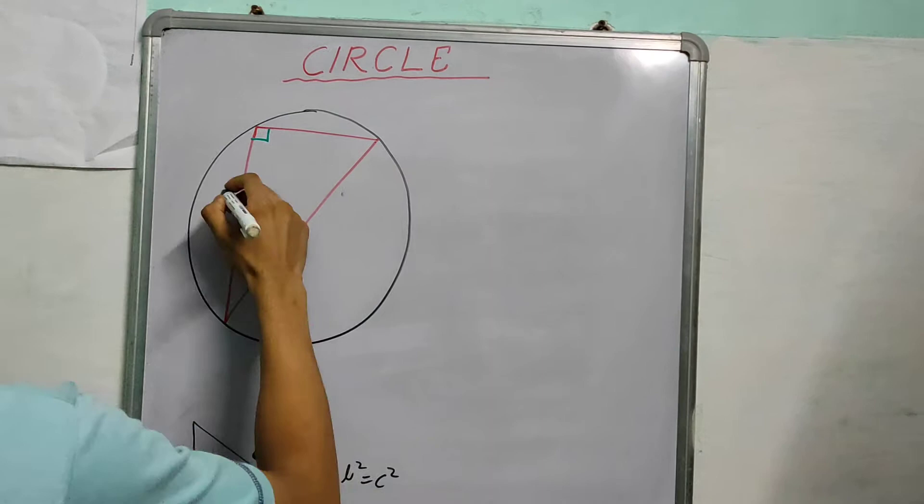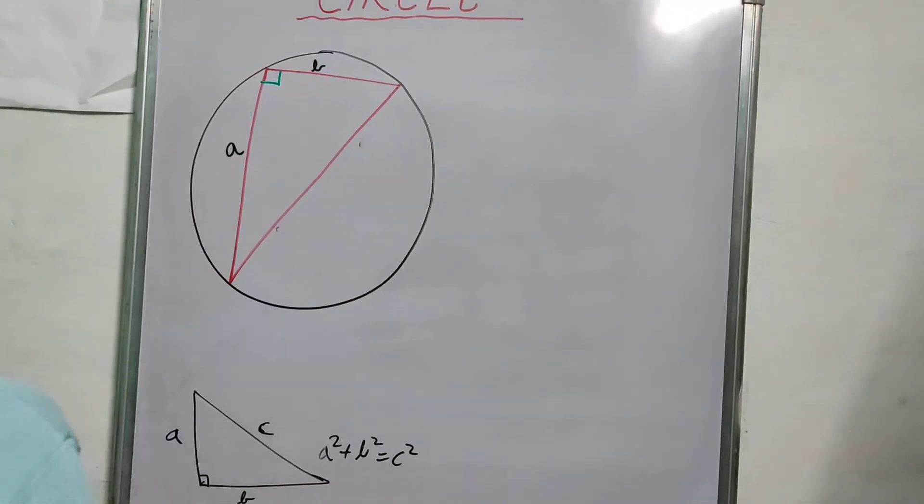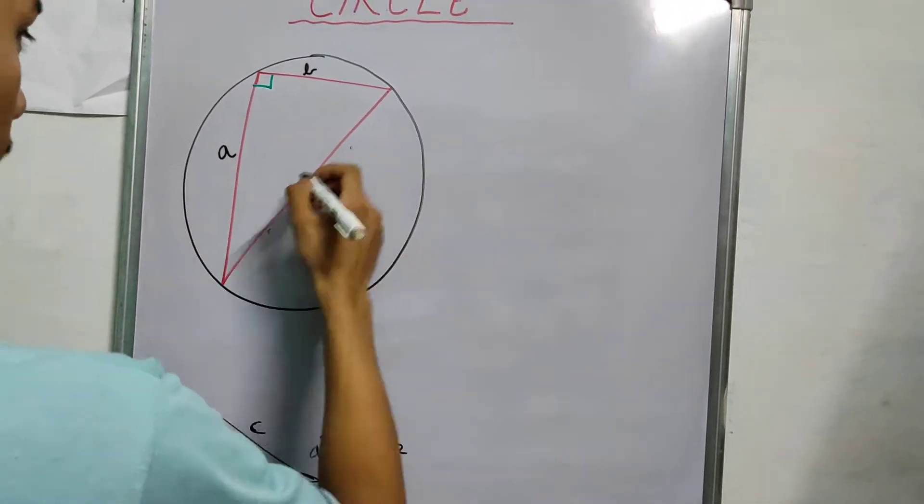And now, let me label this. We call this A, B, and the diameter, the entire thing, as C.